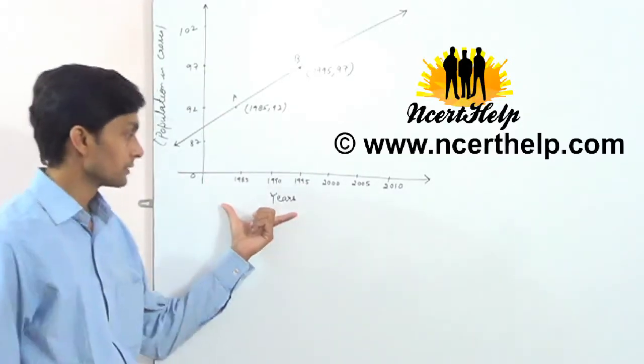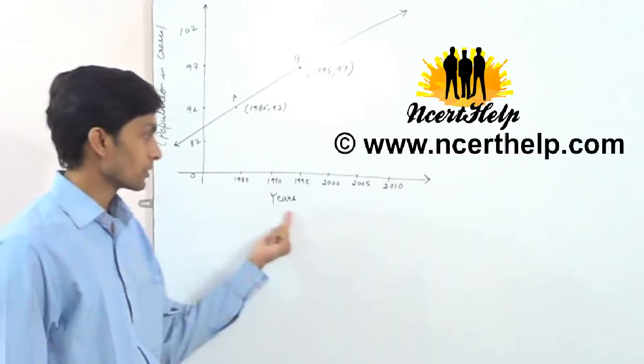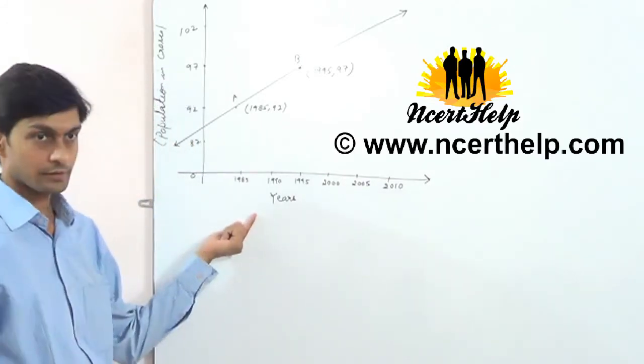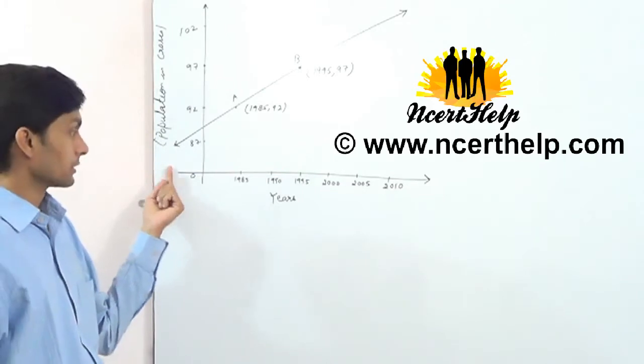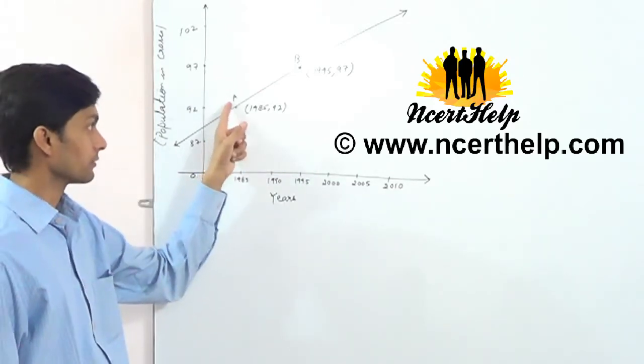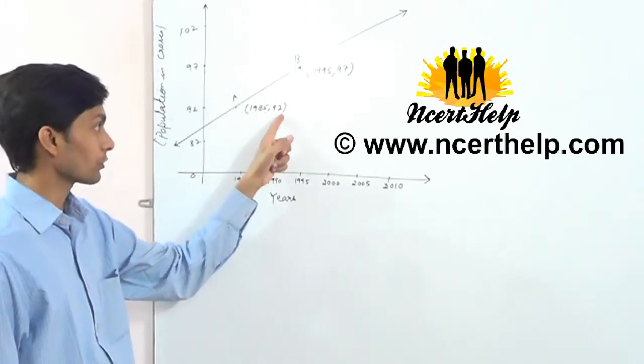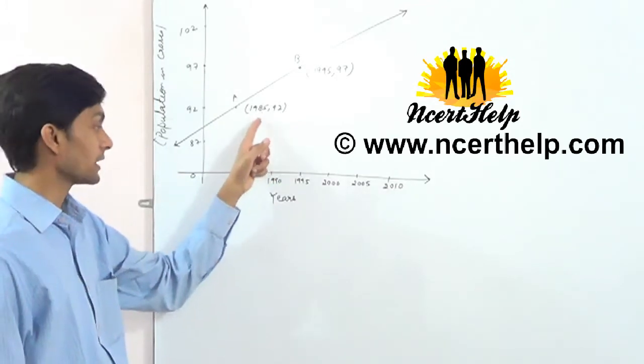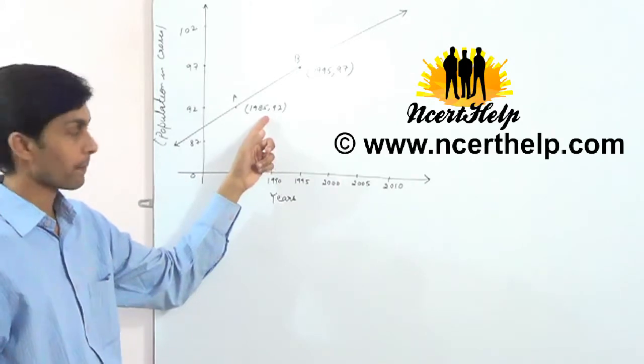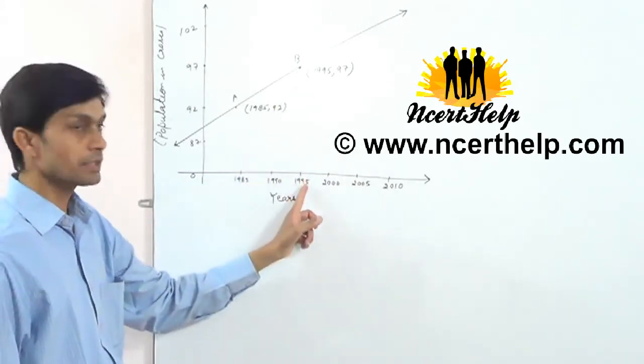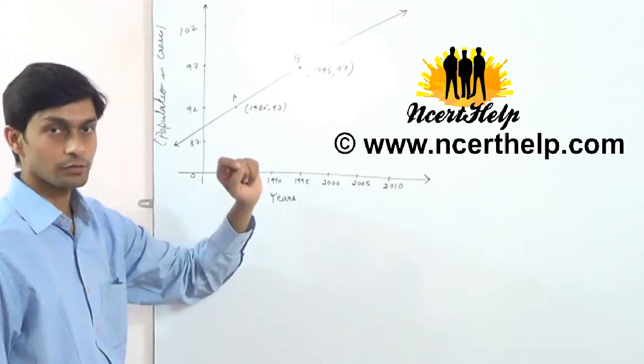Consider the graph in which horizontal axis represents years and vertical axis population in crores. Point A which is 1985, 92 represents in 1985 population was 92 crores. Point B in 1995 population was 97 crores.